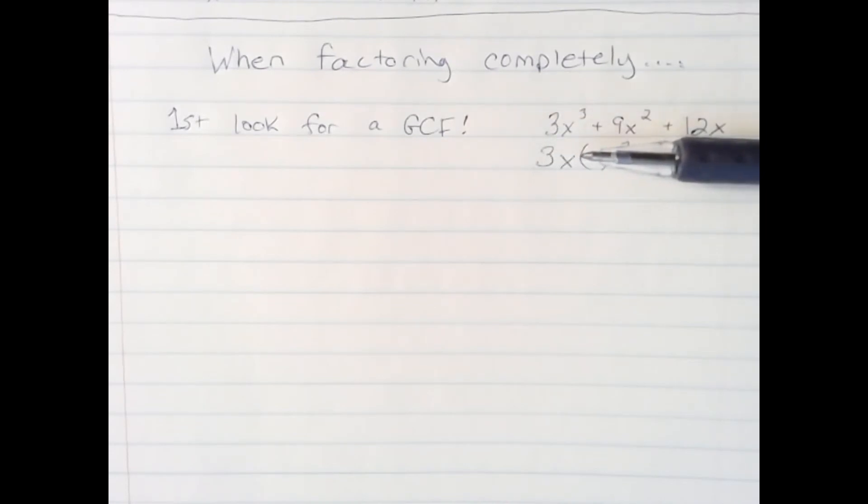So, we will factor out or divide out a 3x from each term. And what we have left with is x squared plus 3x plus 4. So, when it says to factor or factor completely, always look for the GCF first.